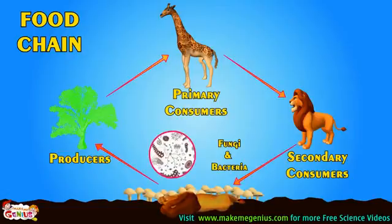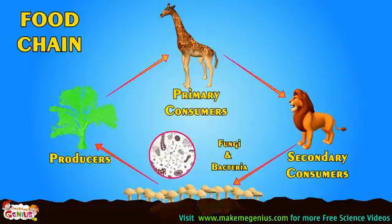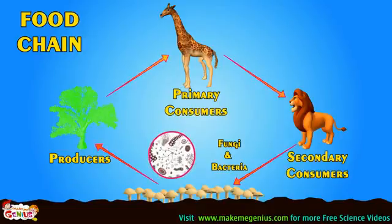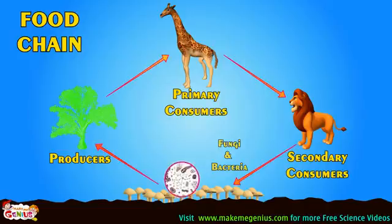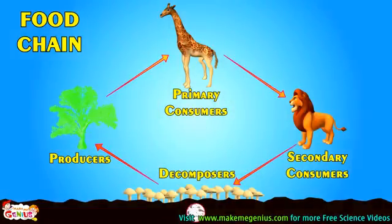When a lion dies, its body is decomposed in soil by bacteria and fungi, and it turns into nutrients. Then these are again used by plants. These fungi and bacteria are called decomposers. Decomposers are an important part of the food chain.